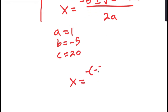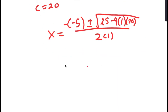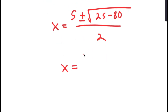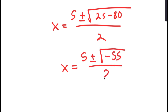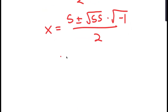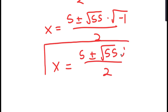So I get x equals negative of negative 5 plus or minus the square root of negative 5 squared, which is 25, minus 4 times 1 times 20, all over 2 times 1. This is equal to 5 plus or minus the square root of negative 55 over 2. Now this equals the square root of 55 times the square root of negative 1 over 2, and since the square root of negative 1 equals i, I get 5 plus or minus the square root of 55 times i, all over 2. So these are two more solutions to this equation.